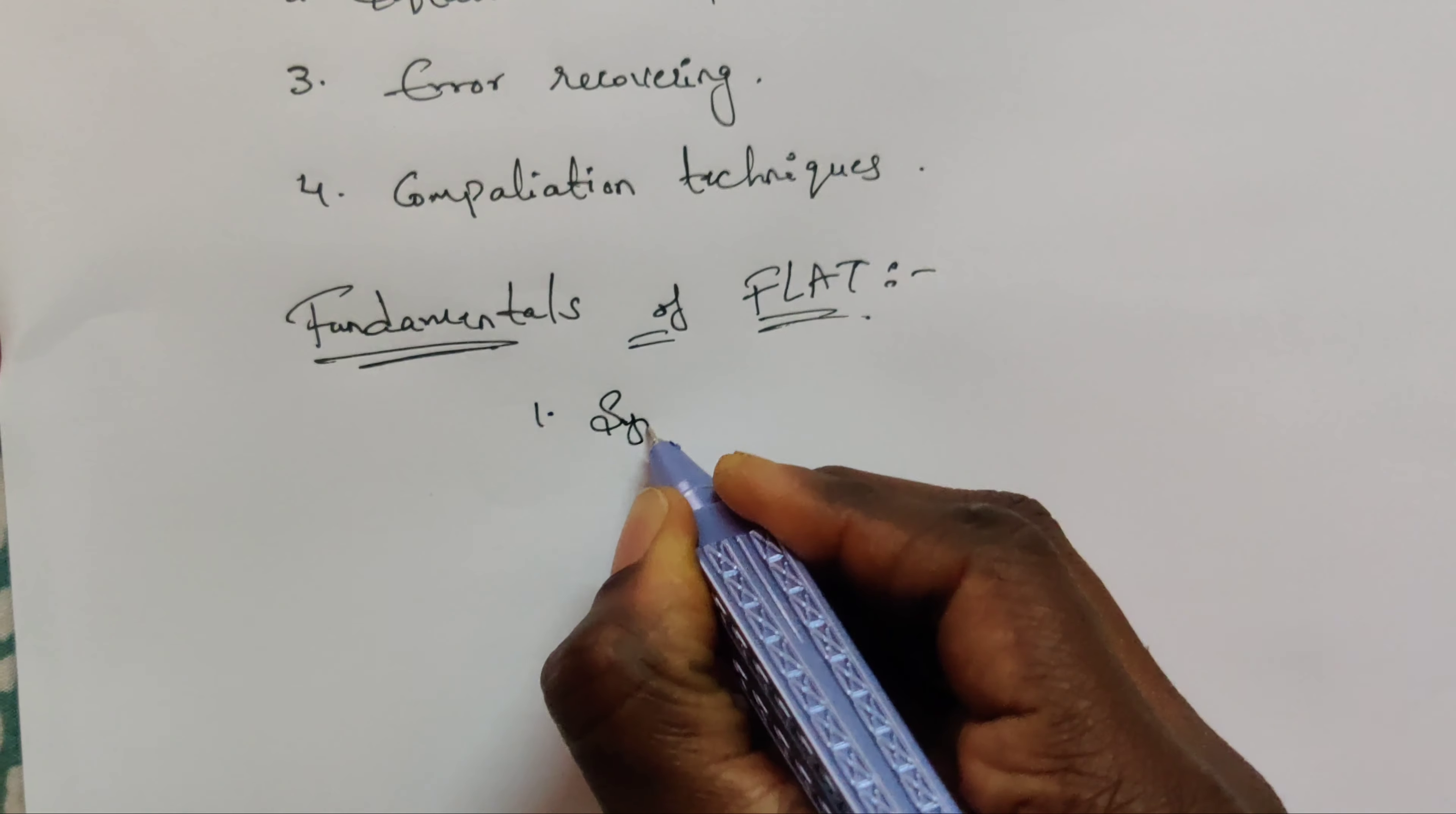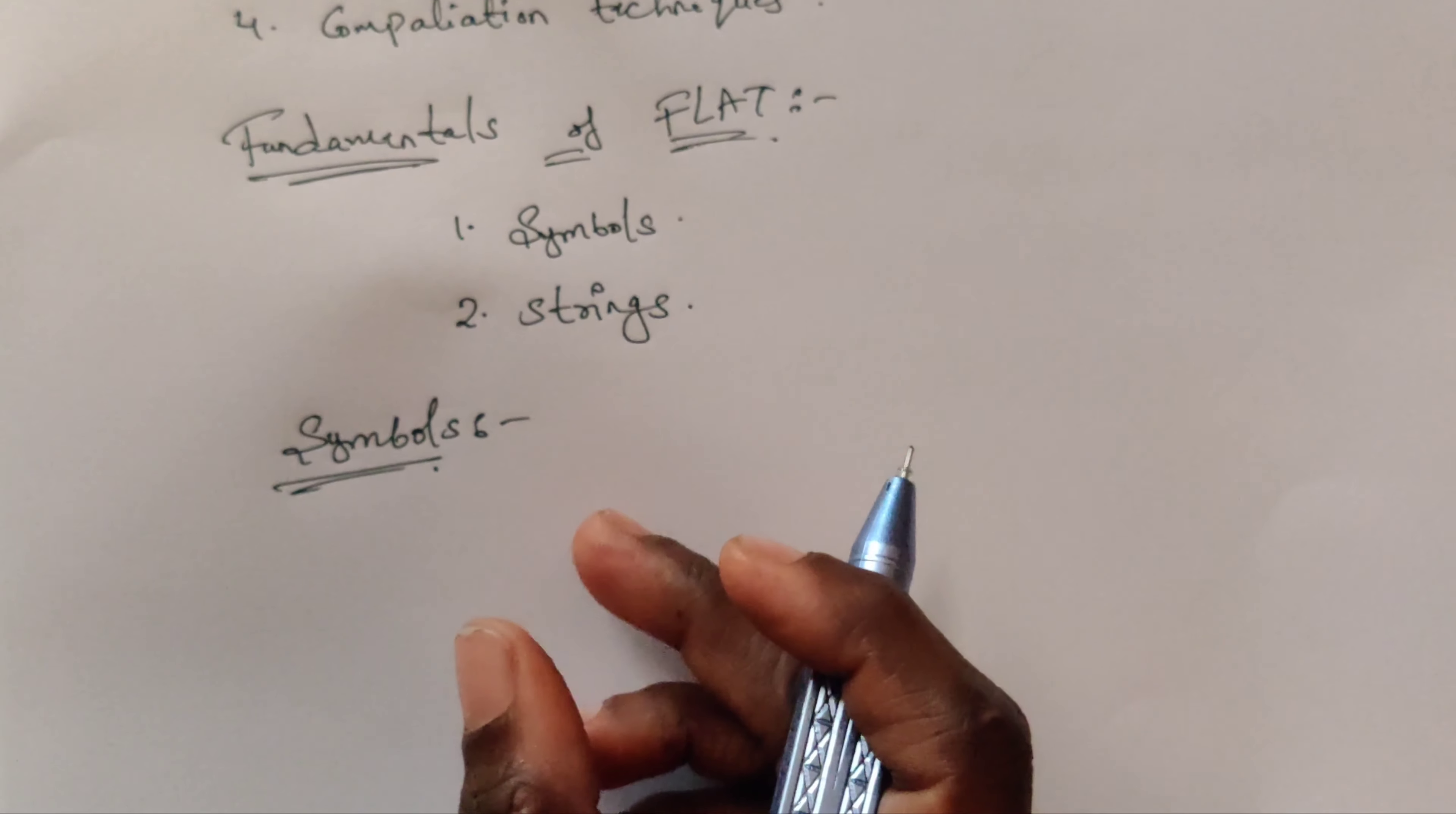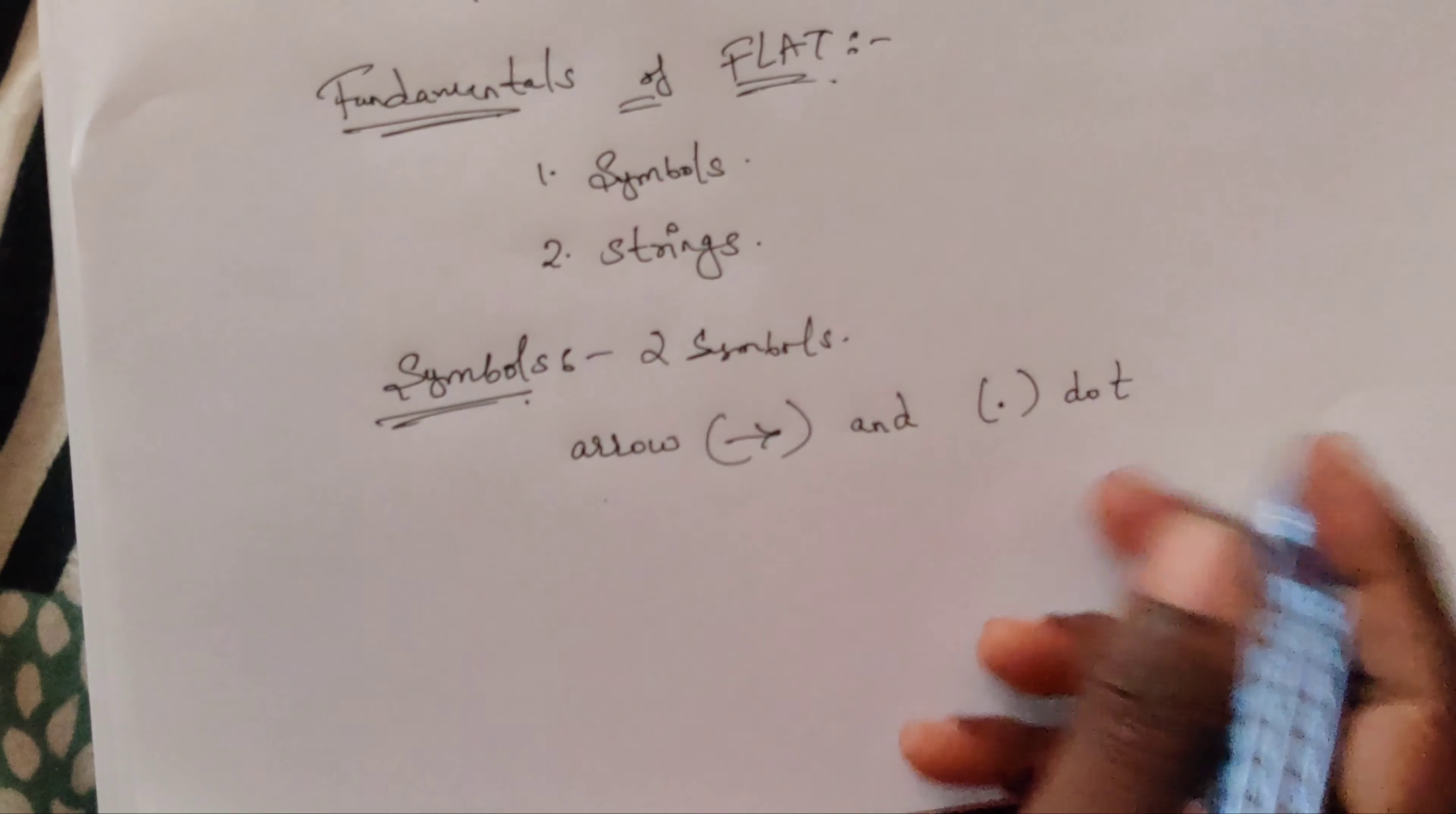One is symbols and second one is strings. Symbols - in FLAT we come across two symbols. One is arrow mark and another one is dot.